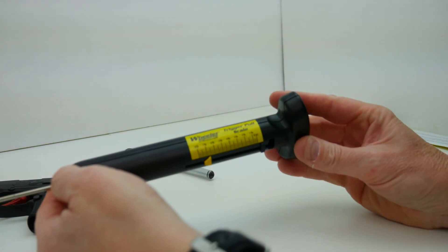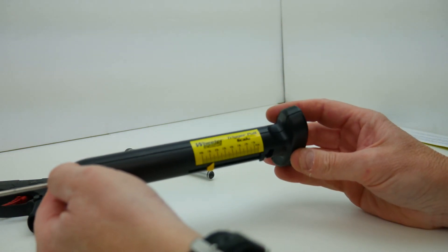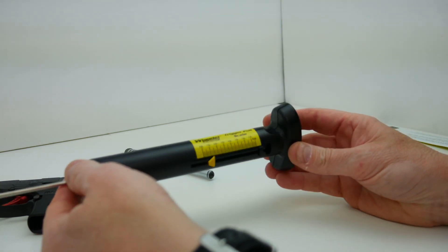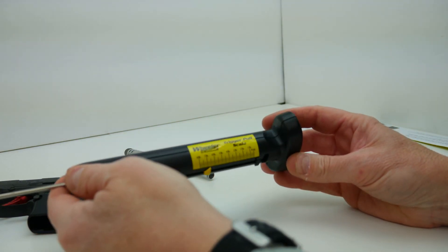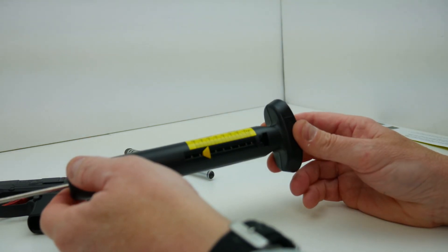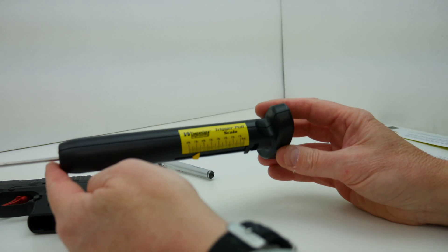So that's going to pretty much wrap up this review of the Wheeler trigger pull scale. This is an inexpensive item but it will get the job done and give you an idea of what your pull weight is if you're swapping out triggers or swapping out springs.